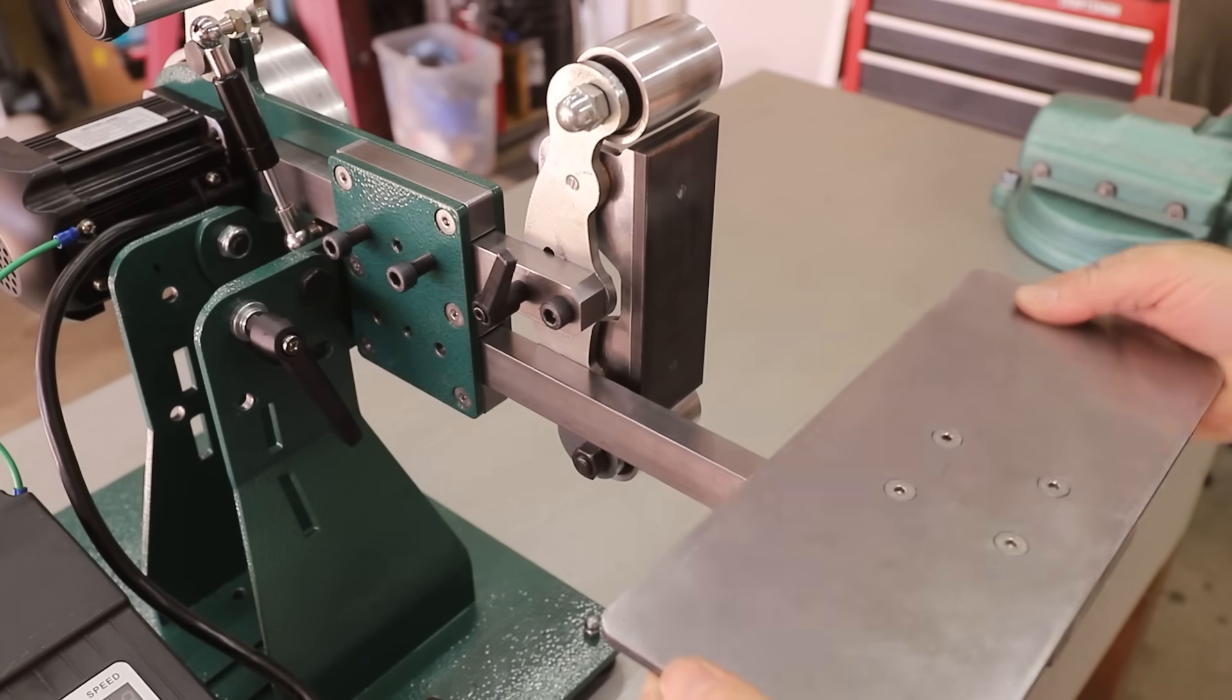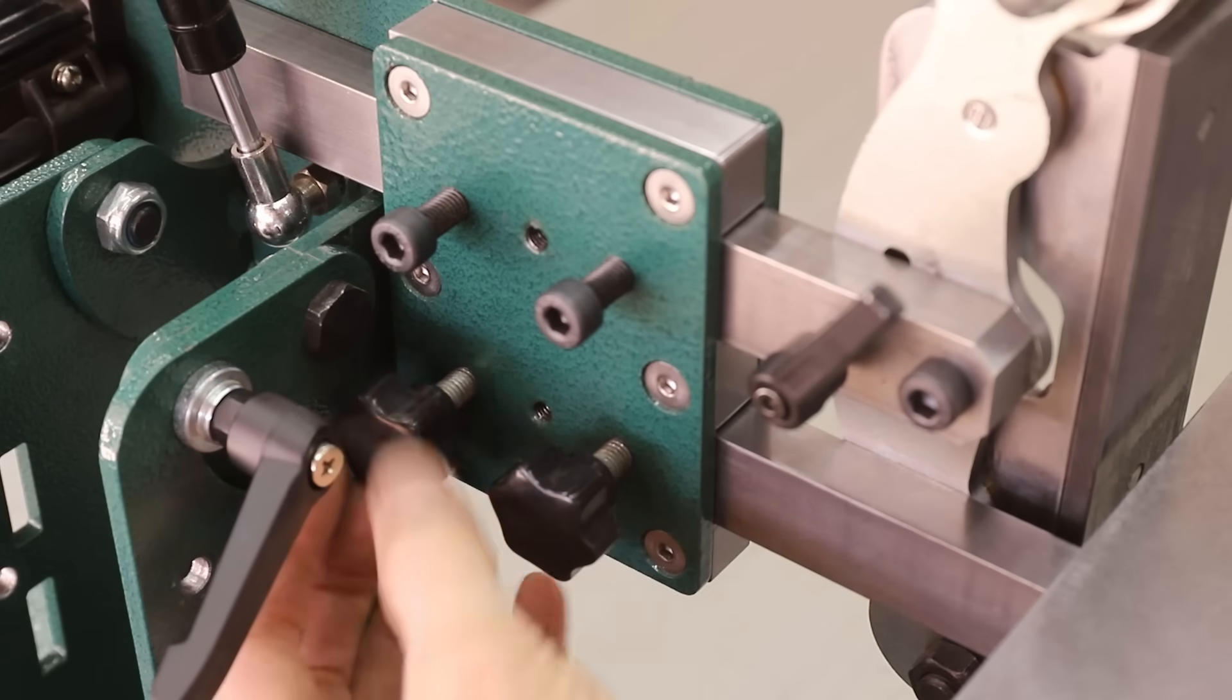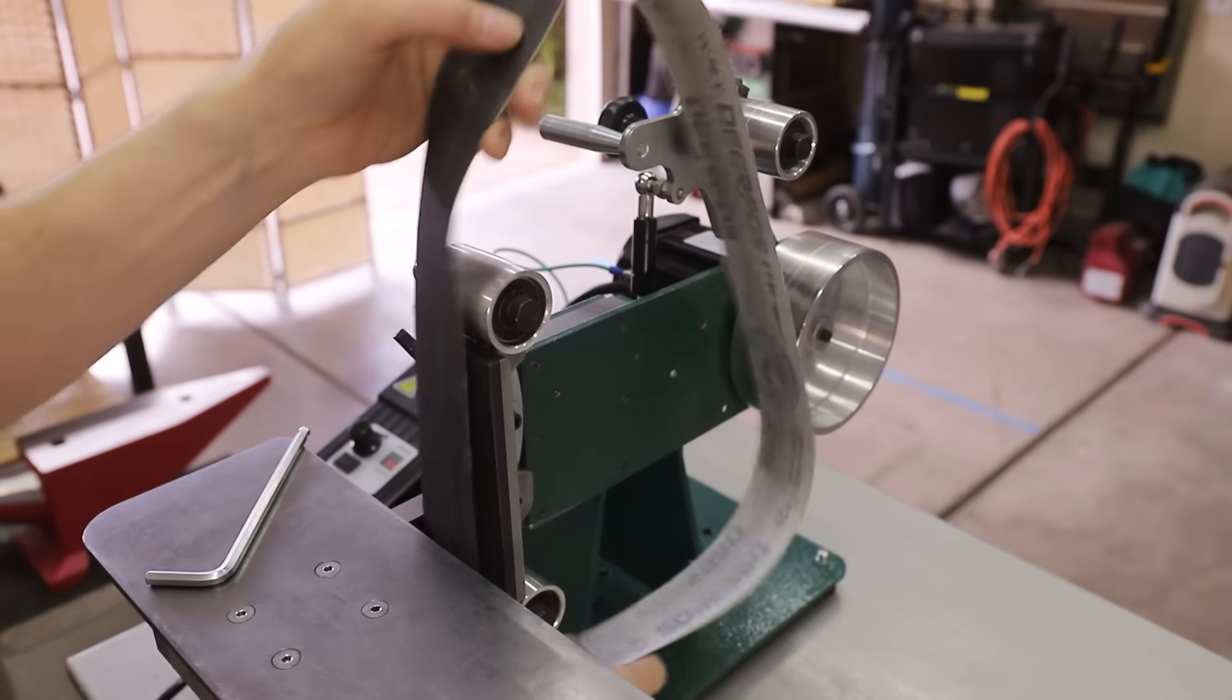But most of what I'm doing with this machine right now, I don't need a tilting table, so it's not really much of a concern. And the platen bracket does tilt, so I can get a few degrees out of it like that.